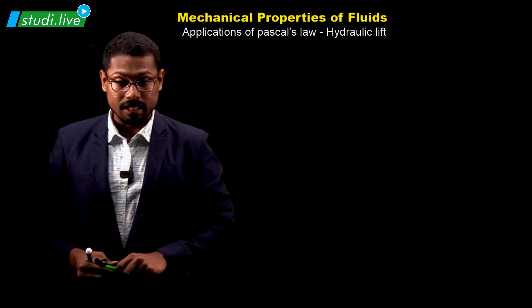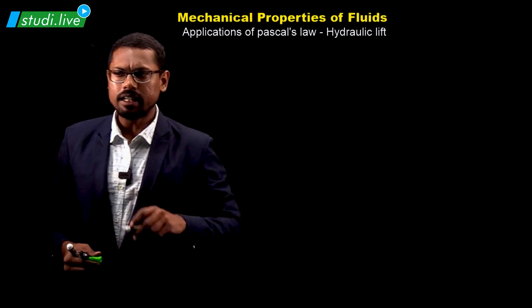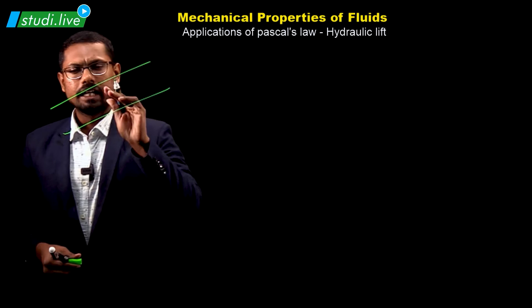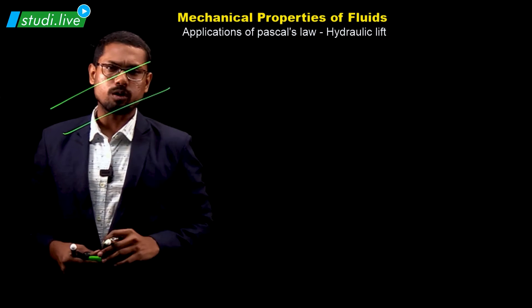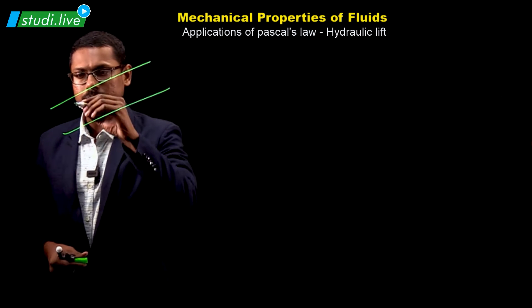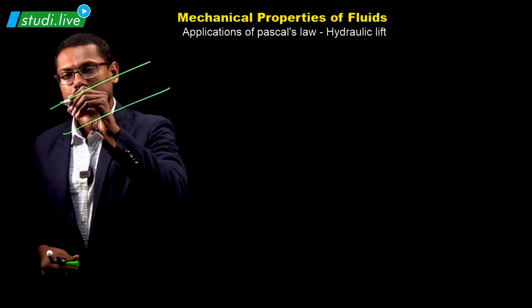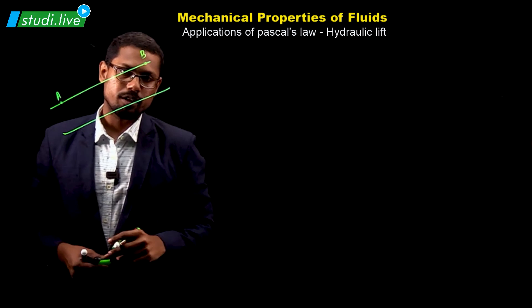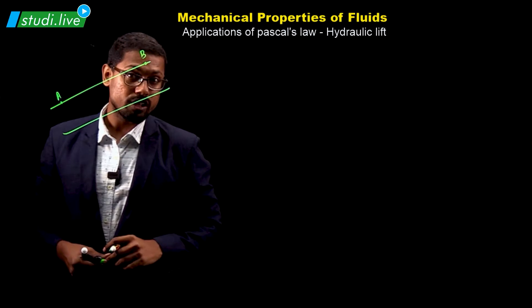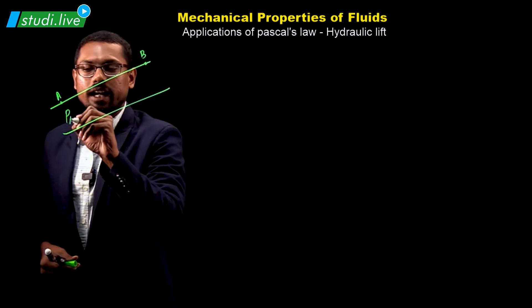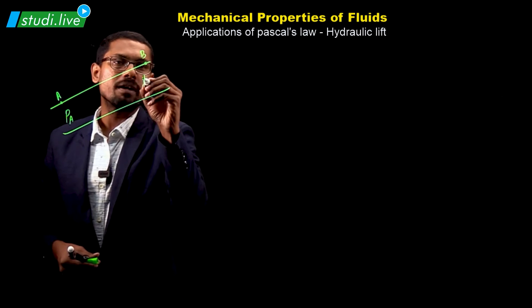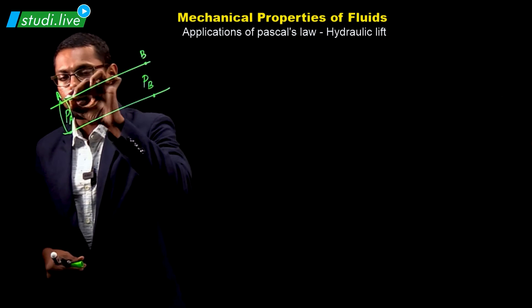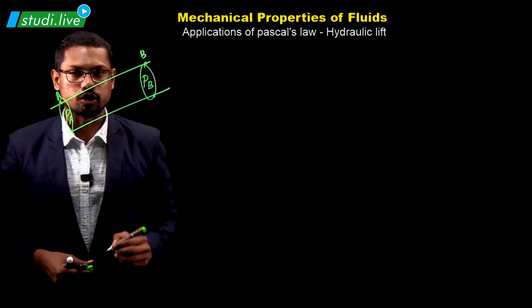Let's consider a very tiny pipe. The areas are not the same — the area at point A and the area at point B are not the same. But if we calculate the pressure, the pressure at point A is the same as the pressure at point B. That is because of Pascal's law.